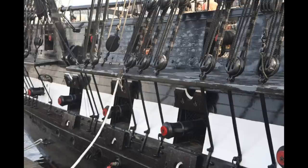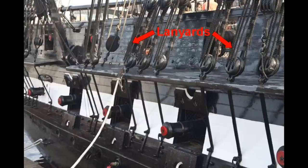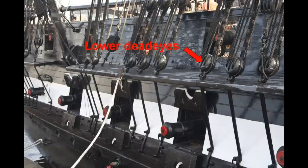Down below you can see more detail of the lanyards, more of the channel which is the plank that sticks out from the hull and the lower deadeyes. Also here are the chain plates, in this case they're actually bars.